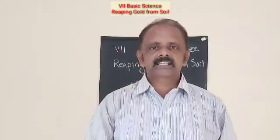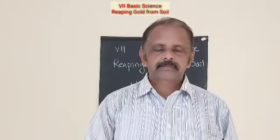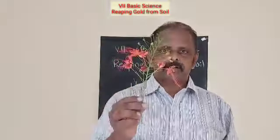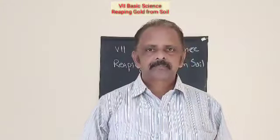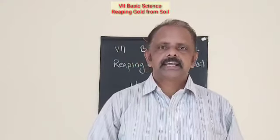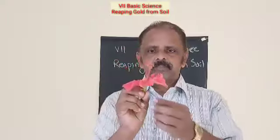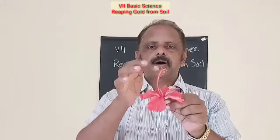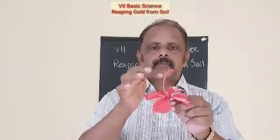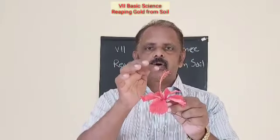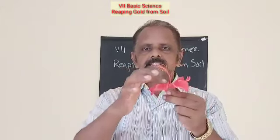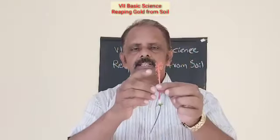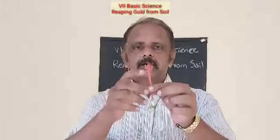How is a seed produced? You learned this in sixth standard — the lesson 'flower to fruit.' Look here, it is a flower. Do you know the parts of a flower? This is a hibiscus flower. The stamen is the main organ of a flower.